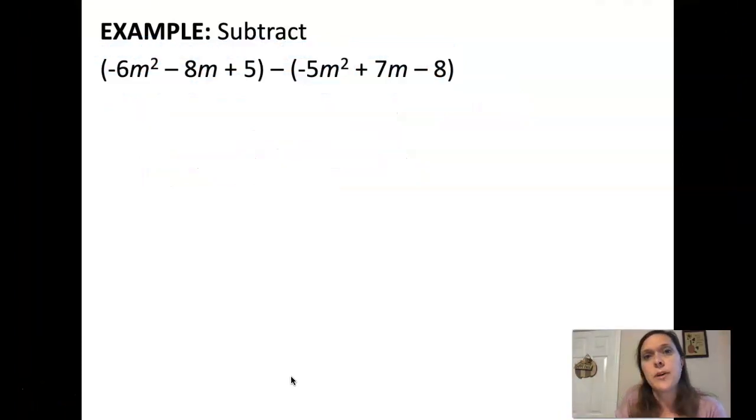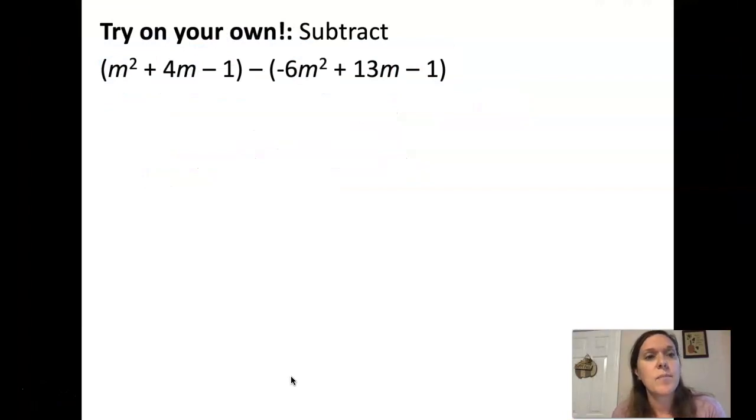Try this last one on your own and then we'll be done with notes. m squared plus 4m minus 1 minus negative 6m squared plus 13m minus 1. Did you get 7m squared minus 9m? Hopefully you did.